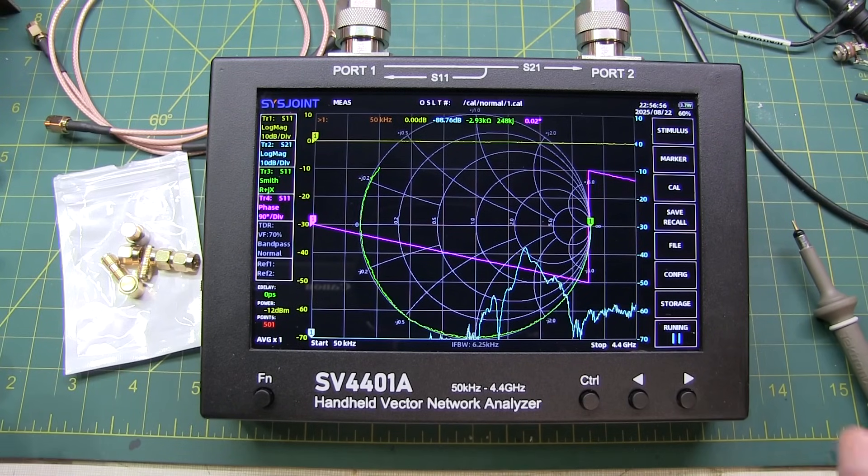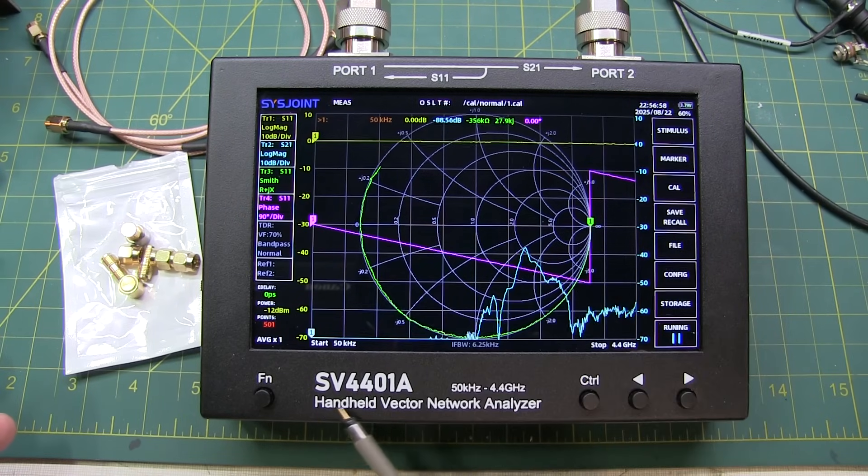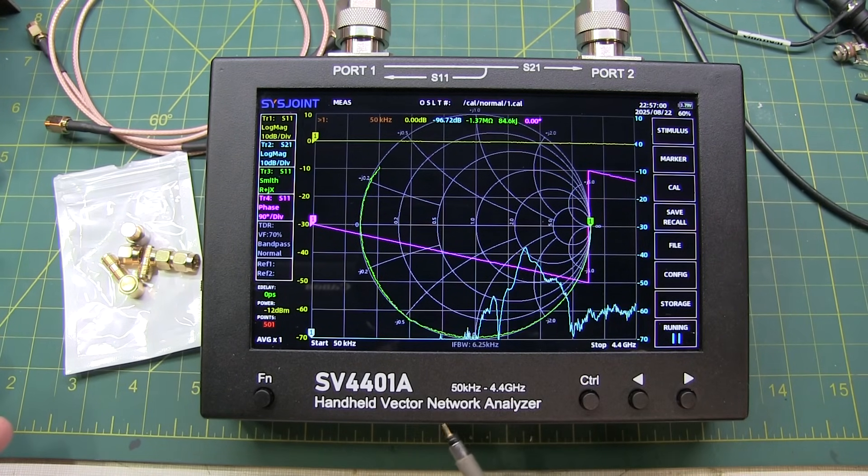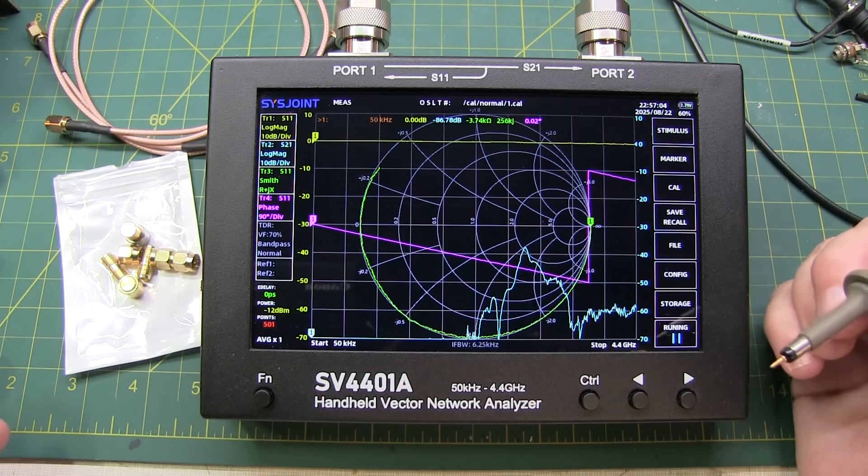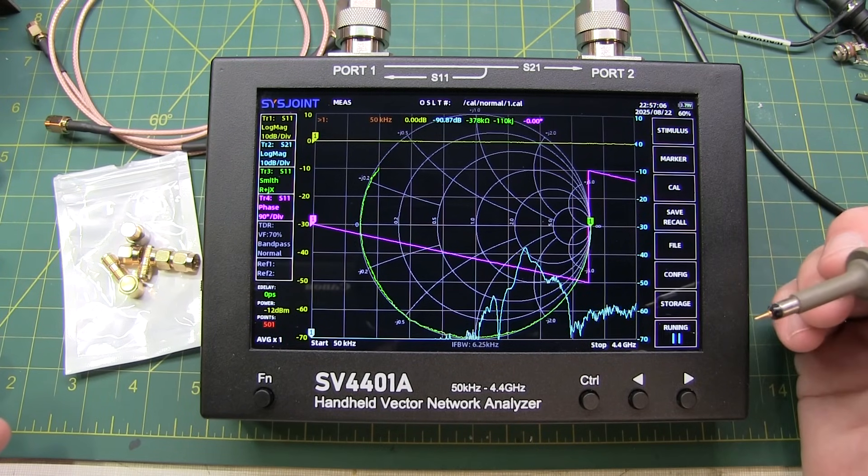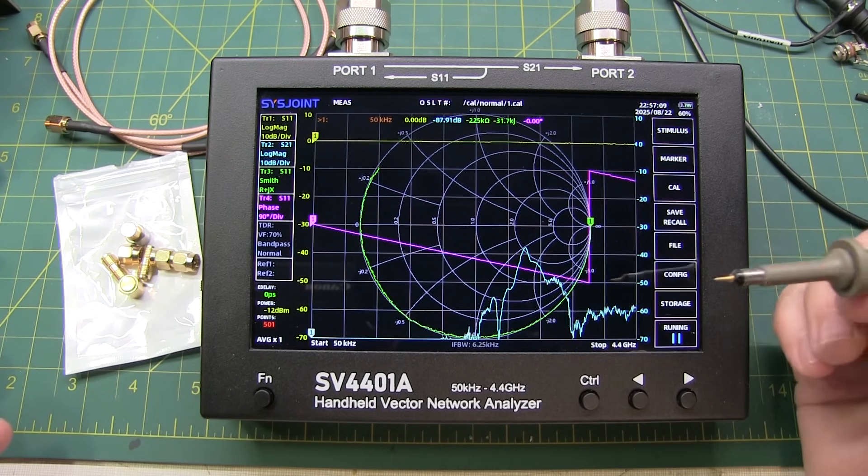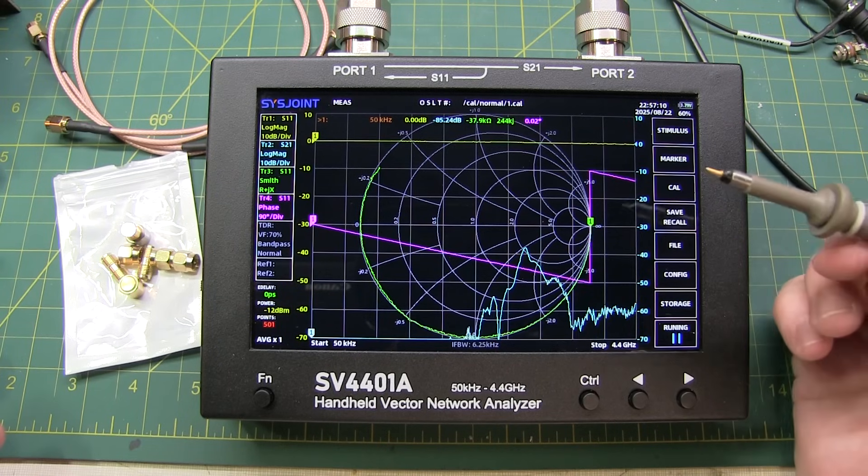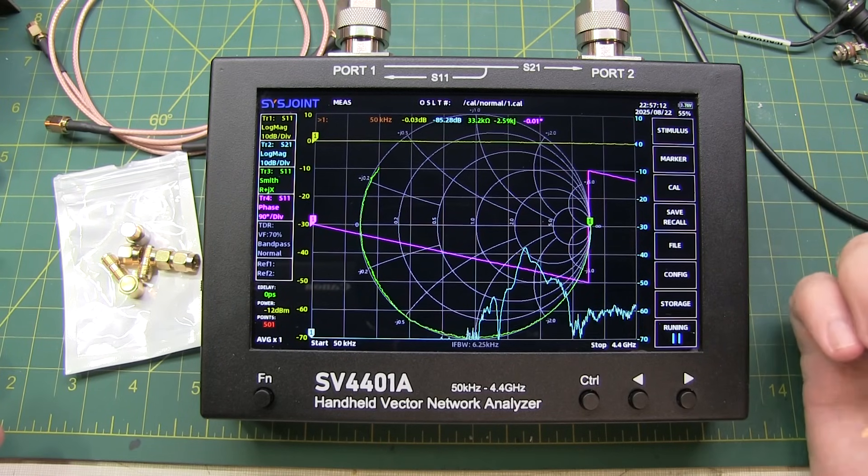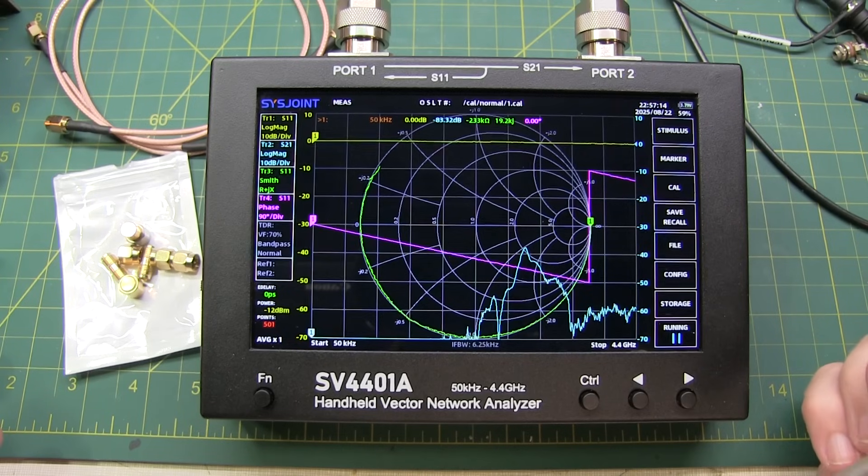Got a new instrument on the bench tonight. This is the Sysjoint SV4401A Vector Network Analyzer. This unit was provided to me from Chelagance in exchange for doing some videos. Now normally I don't accept products like that to do videos unless they're products that I would actually use, and this certainly qualifies as that.